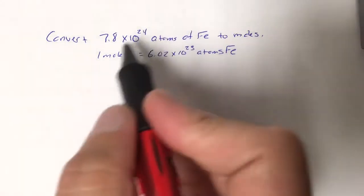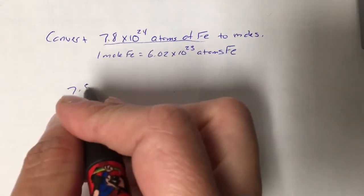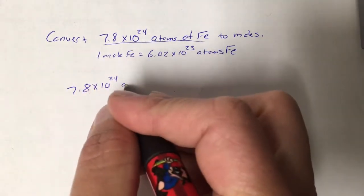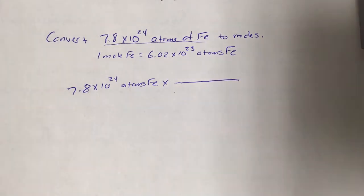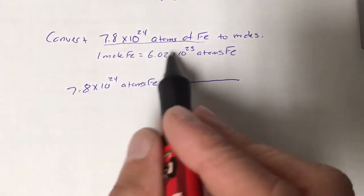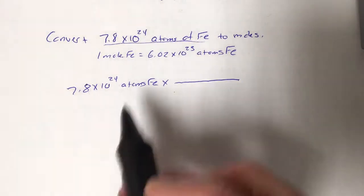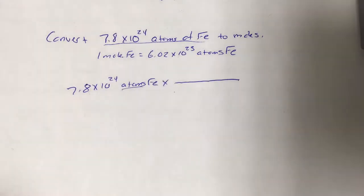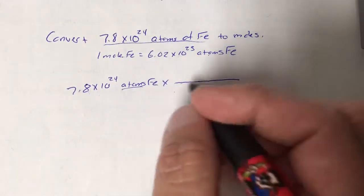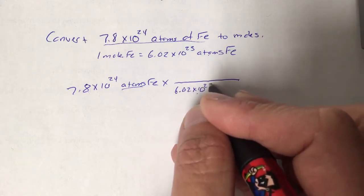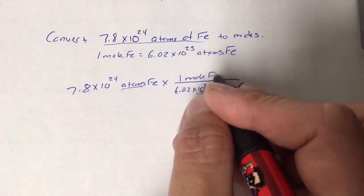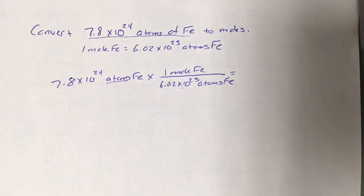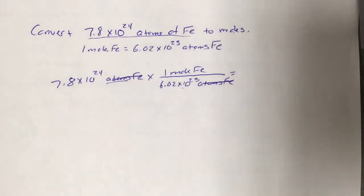As always, start with the given: 7.8 times 10 to the 24th atoms of iron. Multiply by the conversion factor. I look over here — I have atoms in my given, so I put atoms on the bottom and one mole on top. Atoms of iron cancel out; all that's left is moles of iron, which is what I was asked to find. So the setup is good.